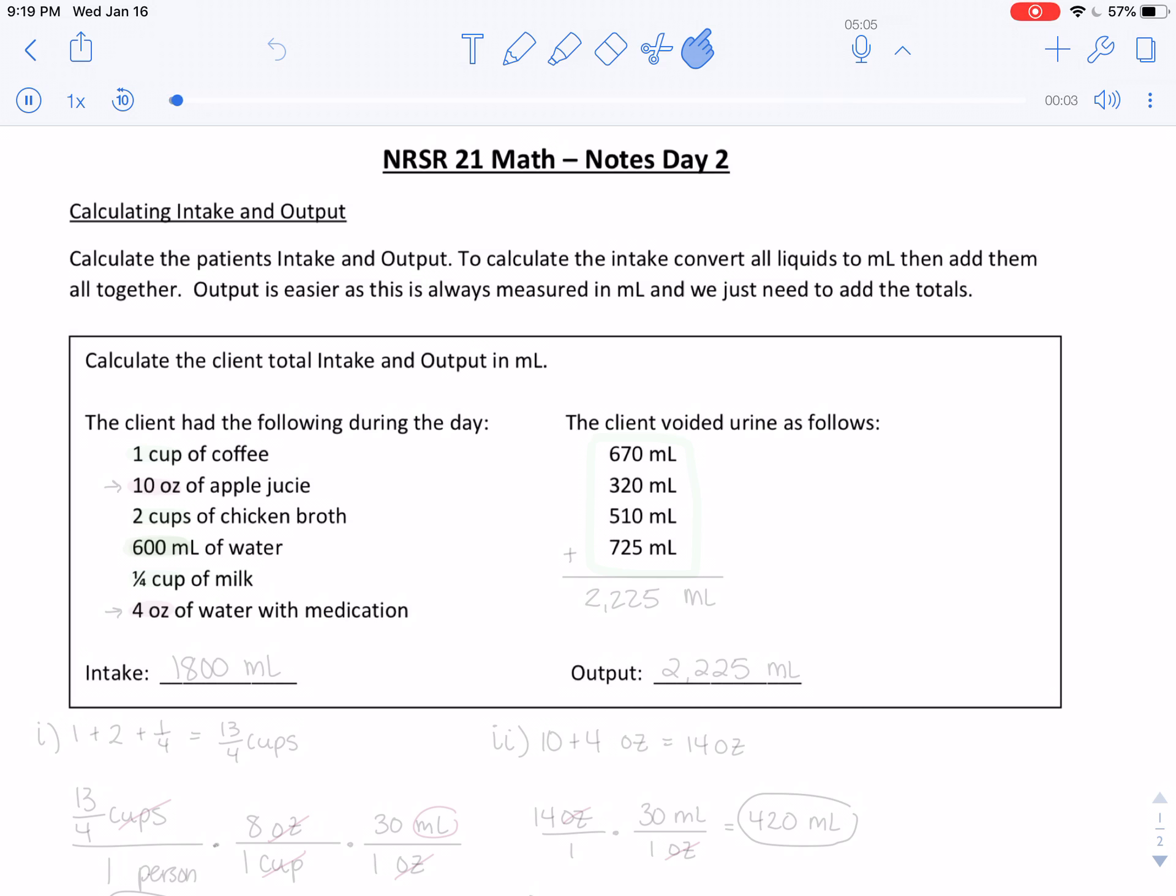All right, so today we're learning about input and output. When we talk about input and output, we want to convert any liquids that we have into milliliters. On the right side here, everything is already in milliliters, so all we need to do is add them together, and we get 2,225 milliliters for output.